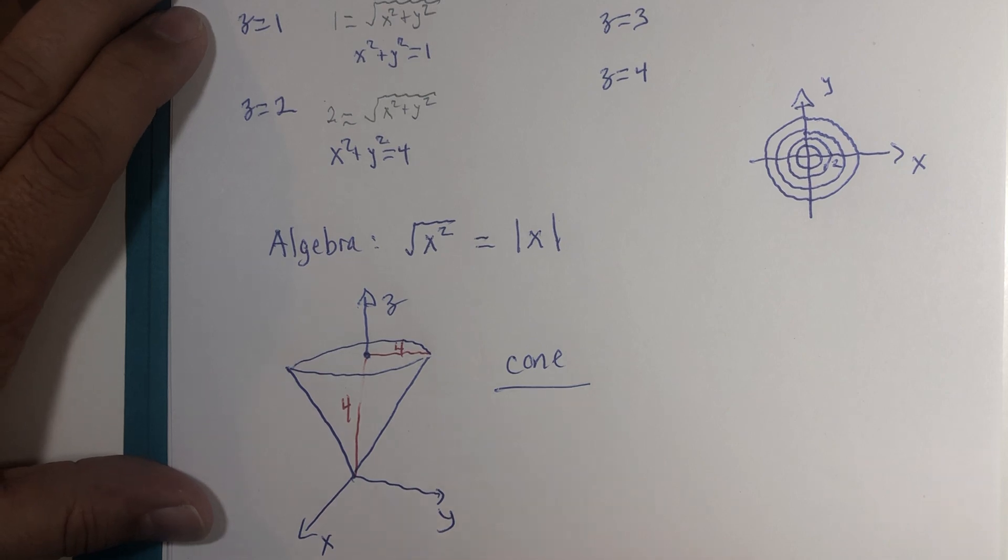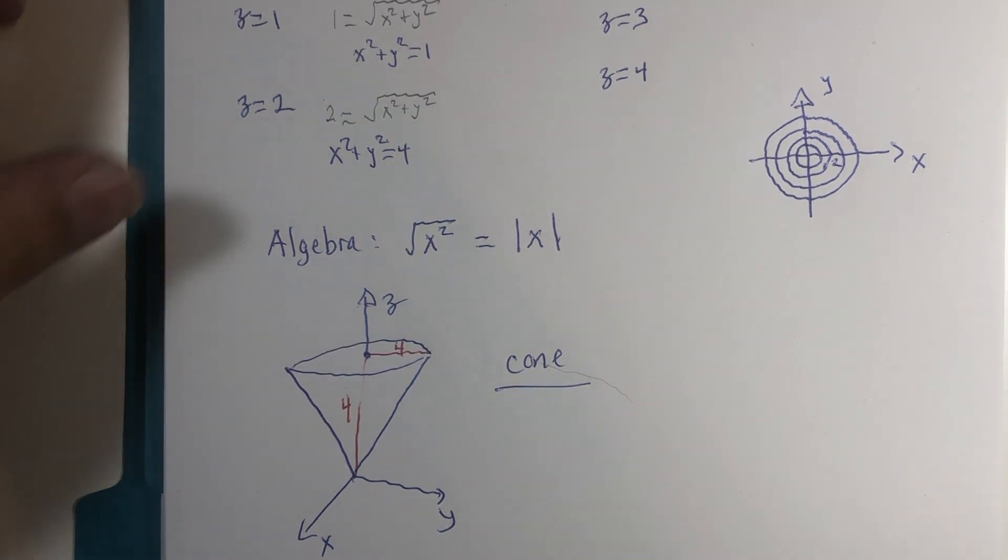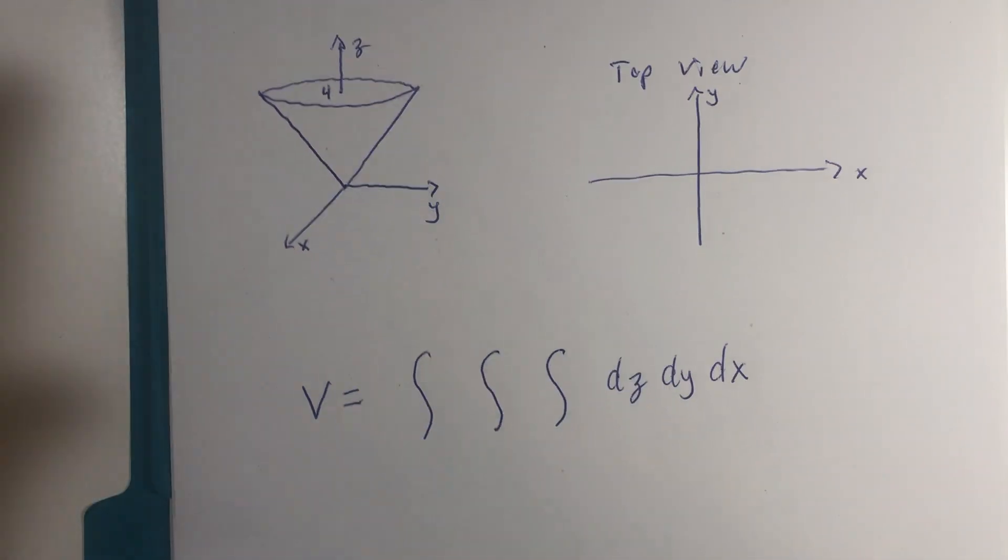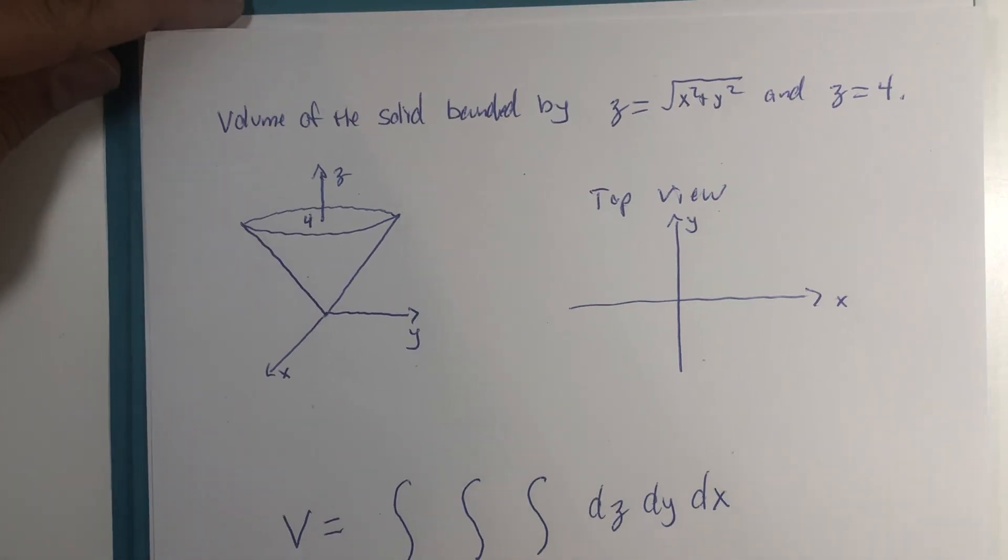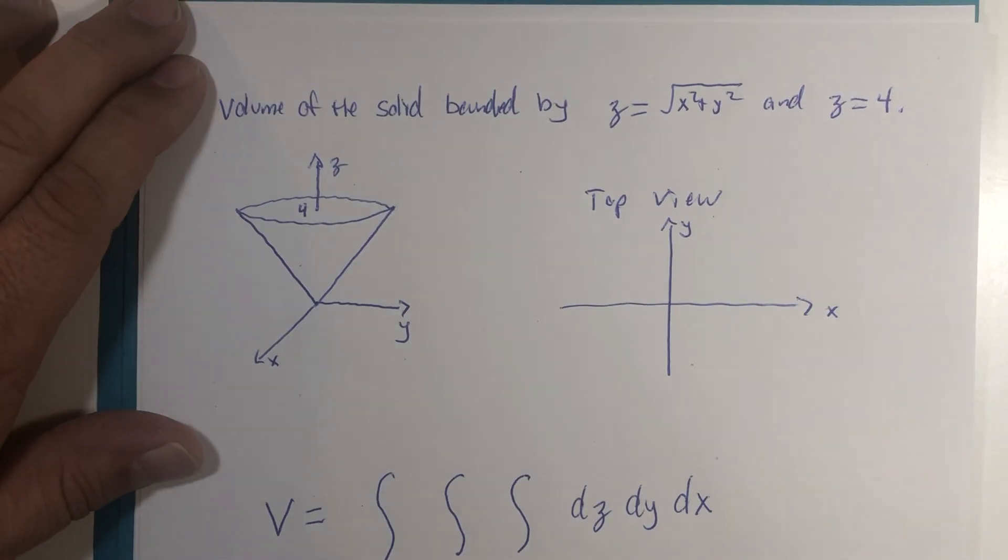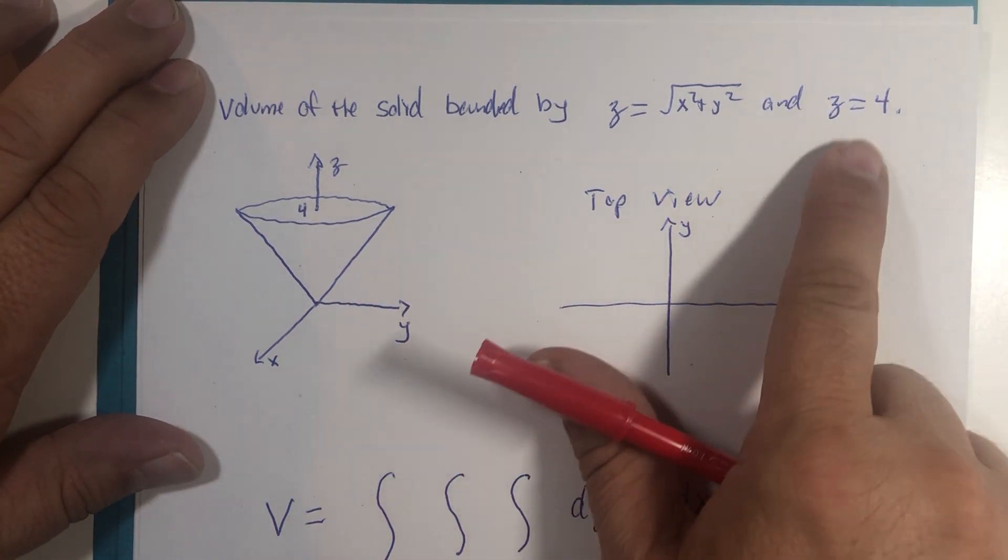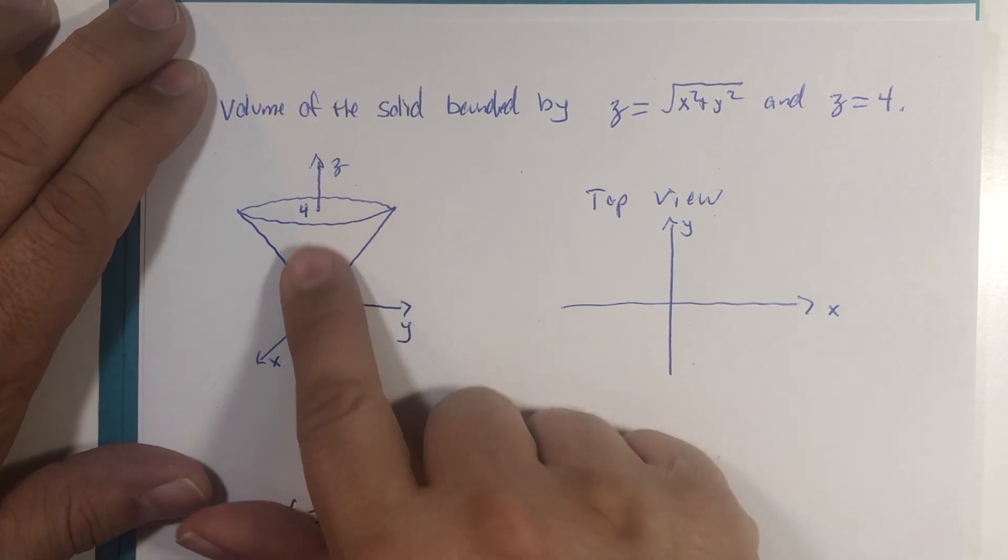Now for the triple integration. Let's set up a triple integral for the volume of this solid created by the boundary of the cone and z equals four, a horizontal plane. The volume of the cone.